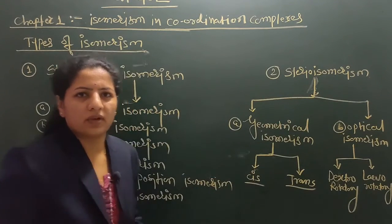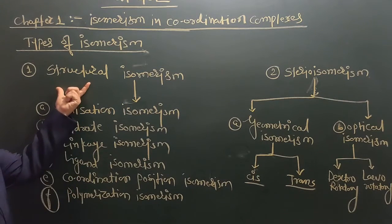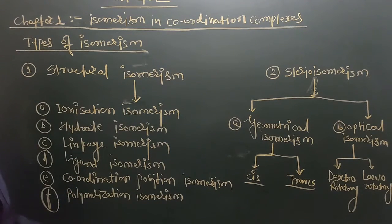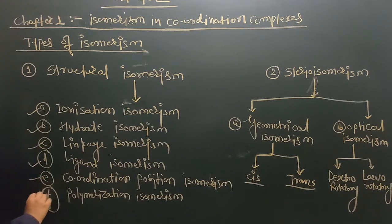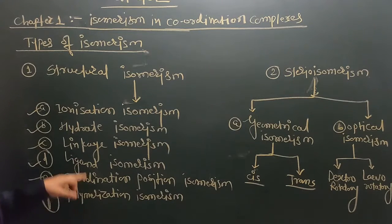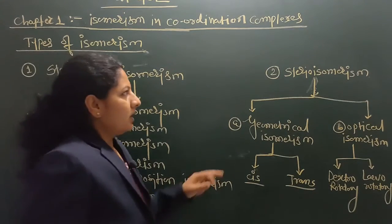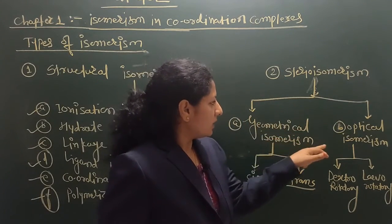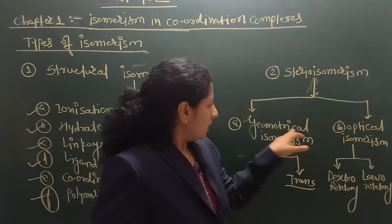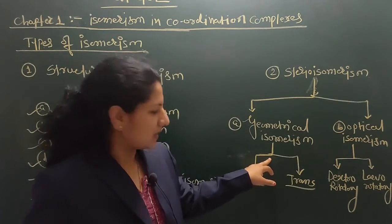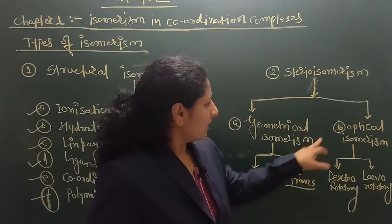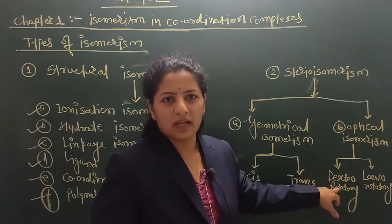So these are the different types of isomerism generally observed in complexes. There are two main types: structural isomerism and stereoisomerism. Structural isomerism is divided into six types including ionization isomerism, hydrate isomerism, linkage isomerism, ligand isomerism, coordination position isomerism, and polymerization isomerism. Stereoisomerism is divided into two types: geometrical isomerism and optical isomerism. Geometrical isomerism has two types — cis isomer and trans isomer — whereas optical isomerism has two types — dextrorotatory and levorotatory.